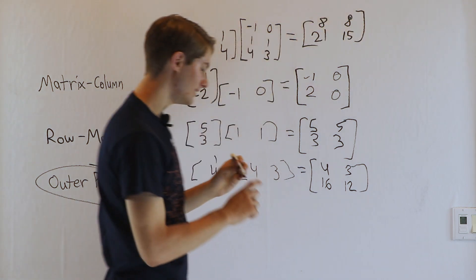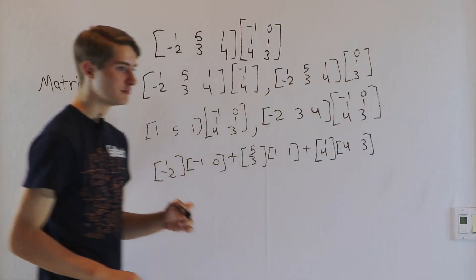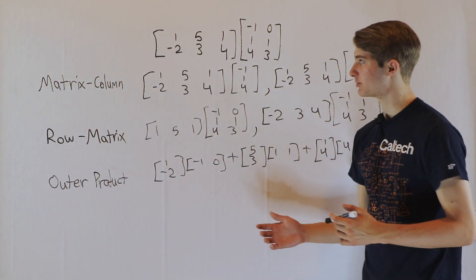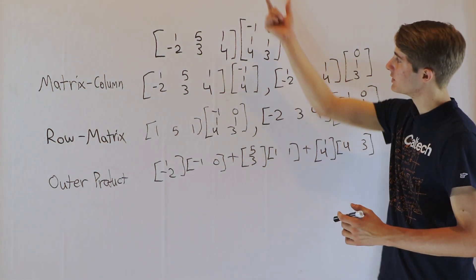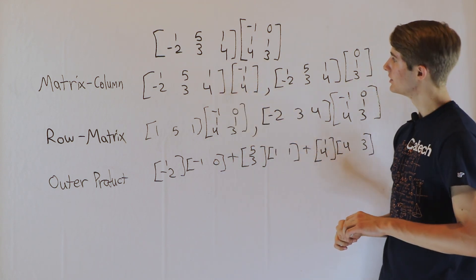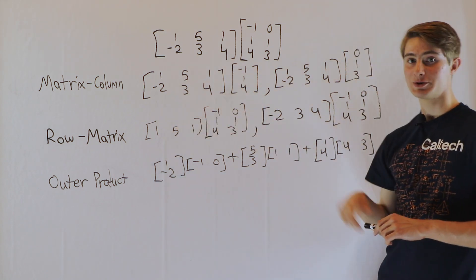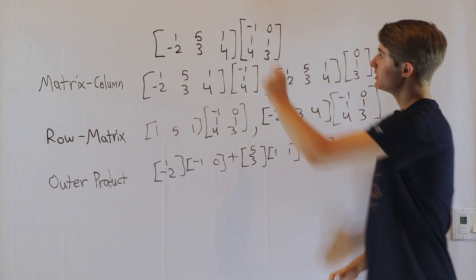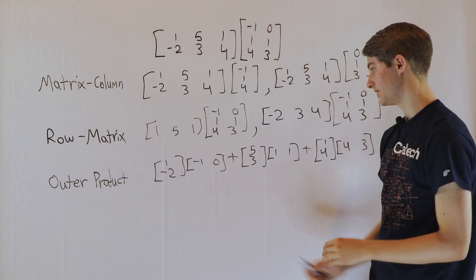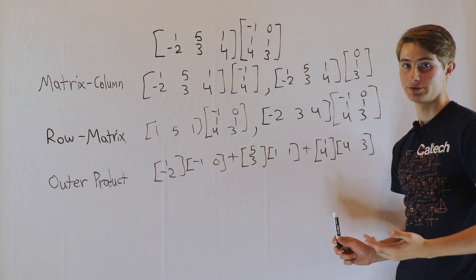That is the same result as we got from the first two methods. So these are three different ways to expand a matrix product: we can split up the right matrix into its columns looking at particular inputs; we can split up the left matrix into its rows looking at particular outputs; or we can divide up each matrix based on the x, y, and z values in the middle and add the outer products together to get our final result.